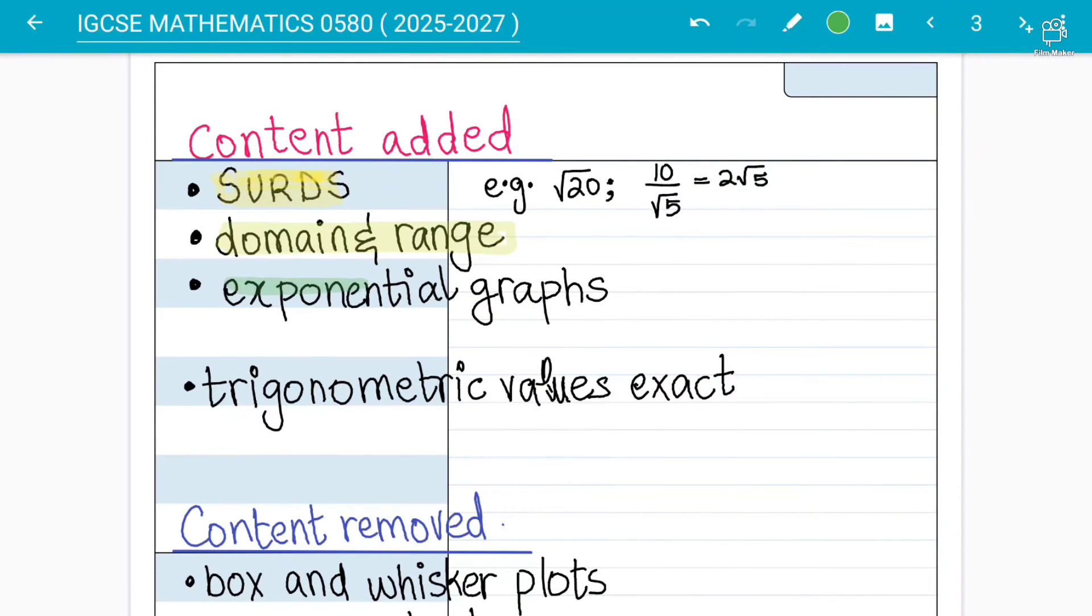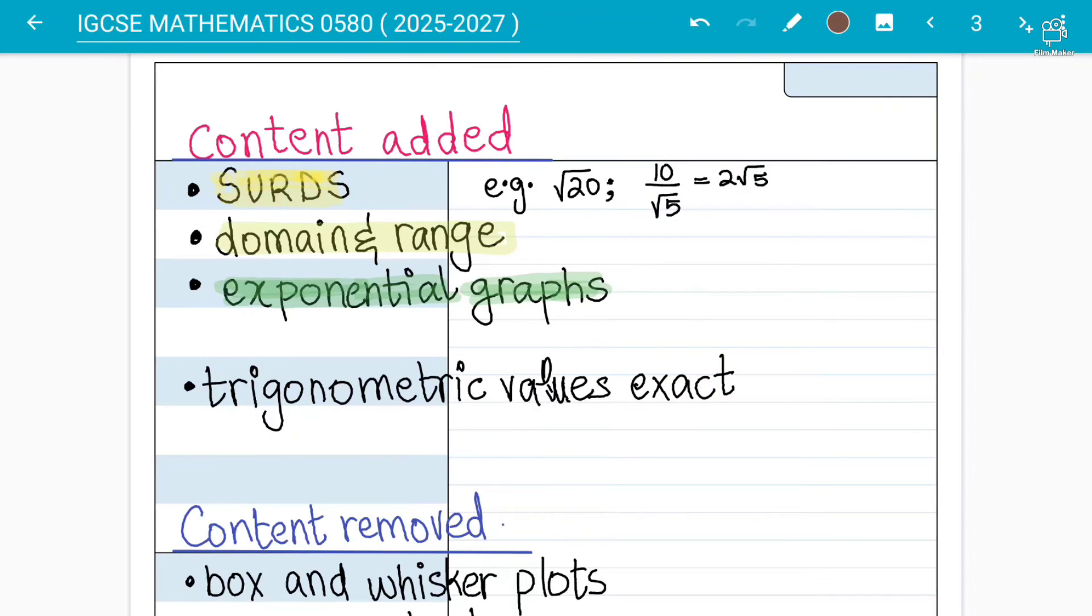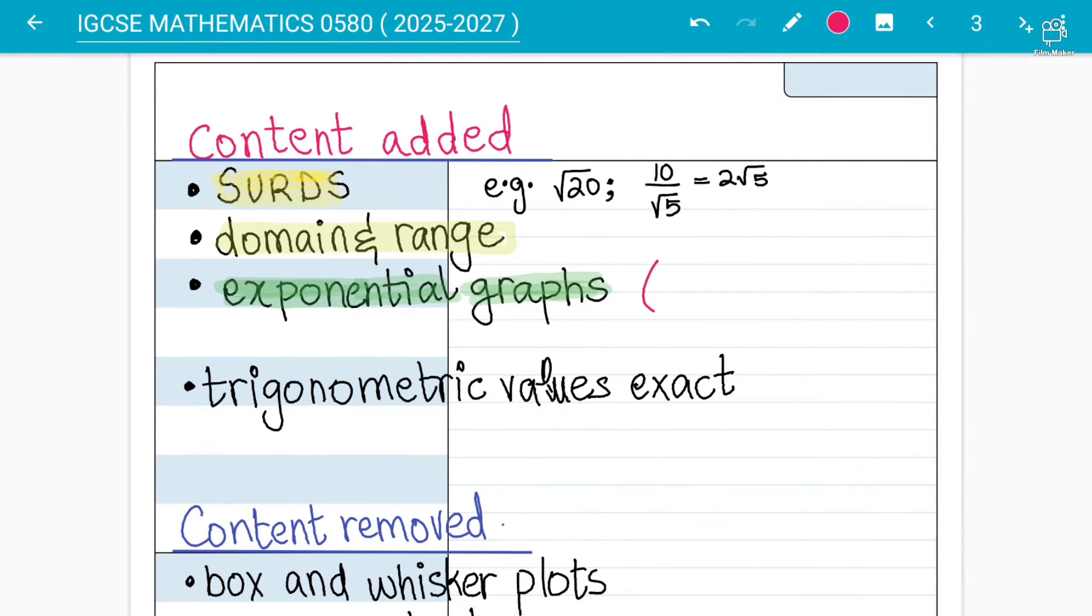Then you can say that they will be also testing on exponential graphs. Exponential graphs are now becoming part of the syllabus where you can have negative powers as well, like negative half, negative decimal powers as well, positive half power.